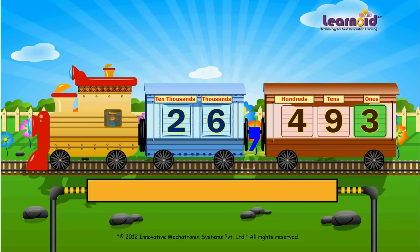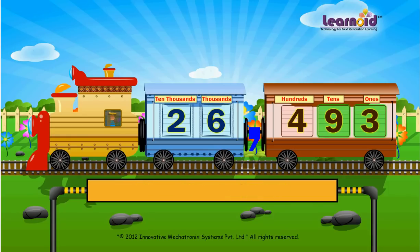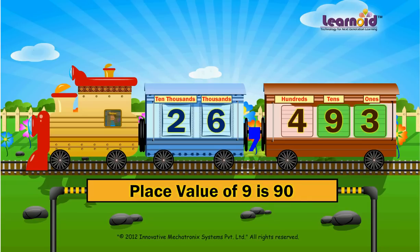Number 3 is in the 1's window. Its place value is 3. Number 9 is in the 10's window. Its place value is 9 tens, or 90.